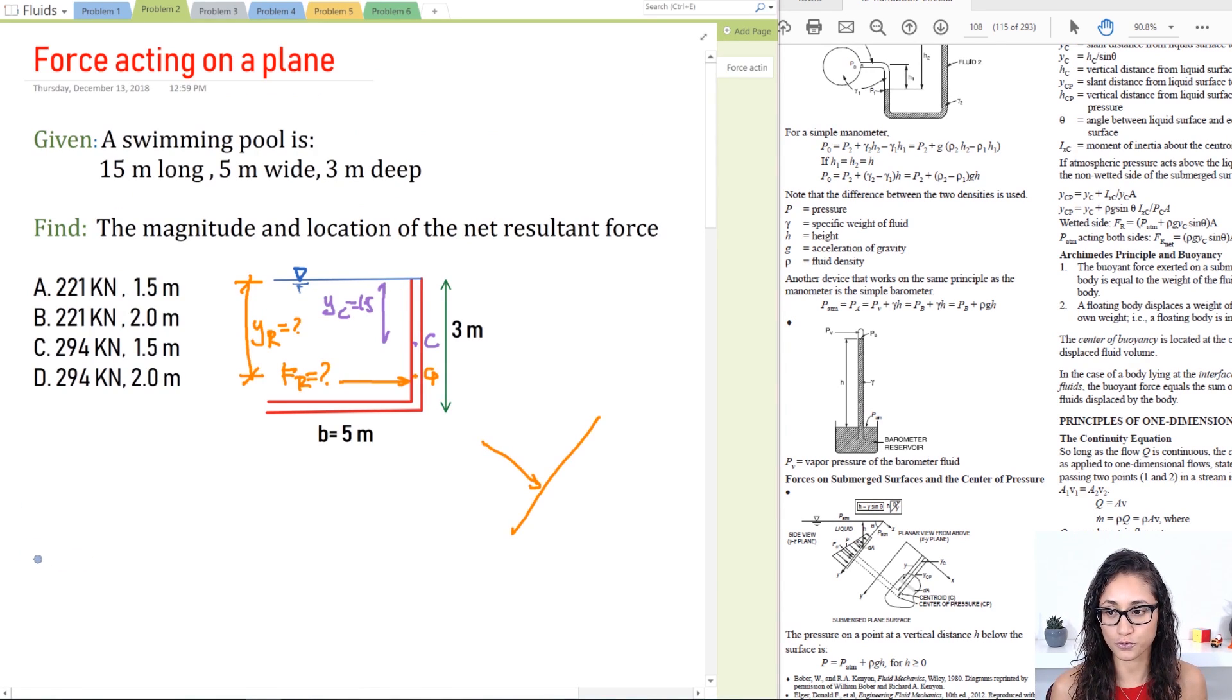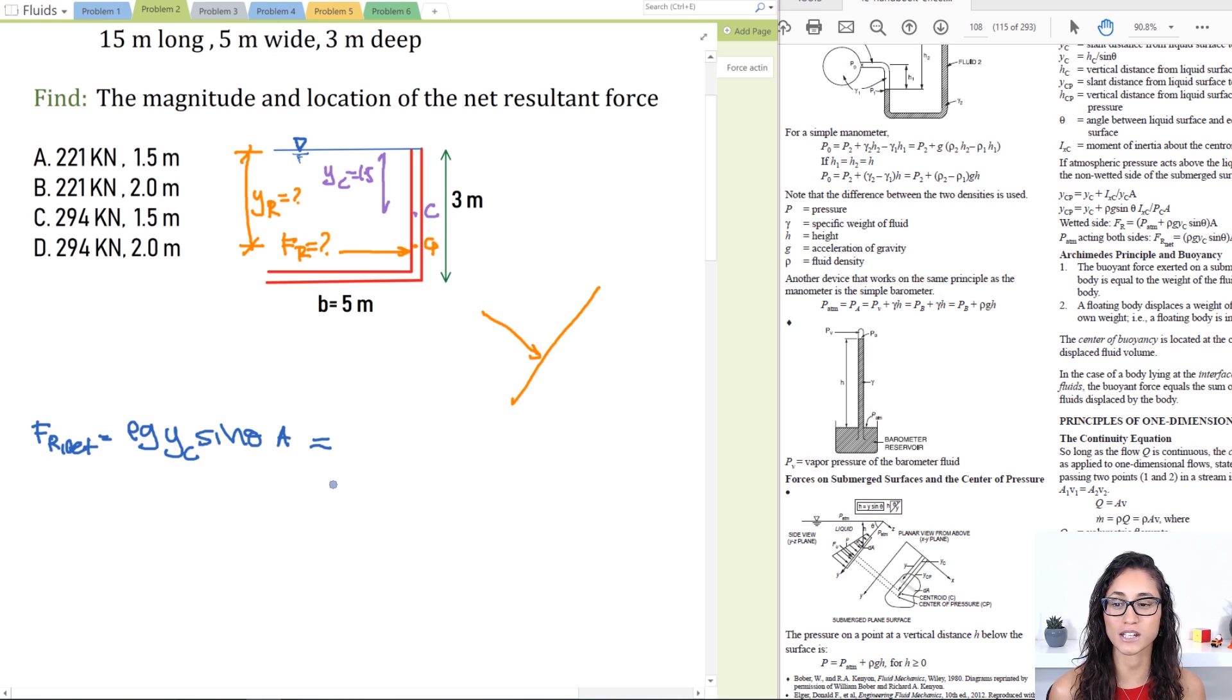So let's calculate for the force first. So we have FR net is equal to the density times g times yc times sine theta times the area. For those of you who are taking fluid mechanics class or if you already took the class, you might not remember this equation very well because most of the fluid mechanics books actually use this formula where it's equal to the unit weight times hc times the area.